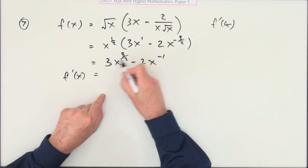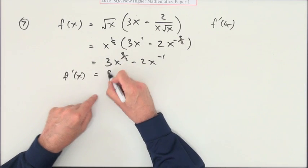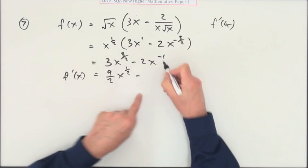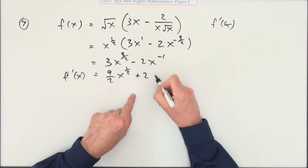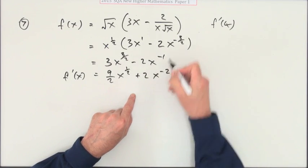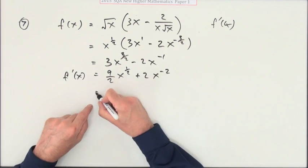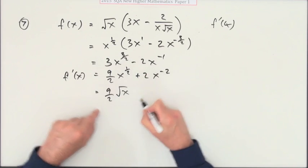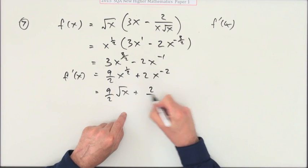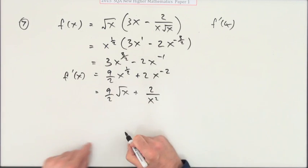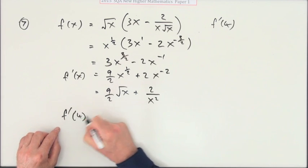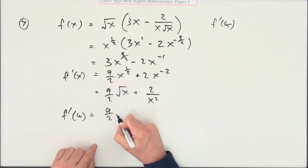So differentiating: multiply by the power, 3 times 3/2 is 9/2, take 1 off the power to get a half. Multiply by the power plus 2, take 1 off the power to get negative 2. Power half is the square root, and power negative 2 means it's underneath with power 2. If I want to evaluate it at 4, I simply put the 4s in.